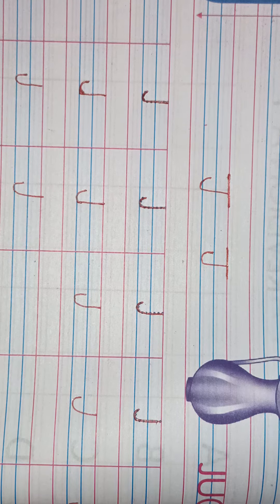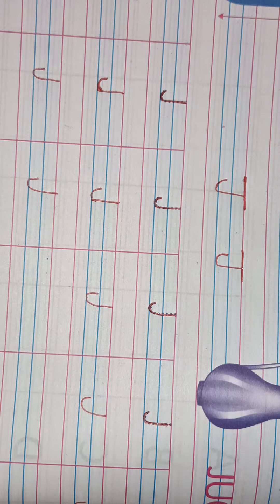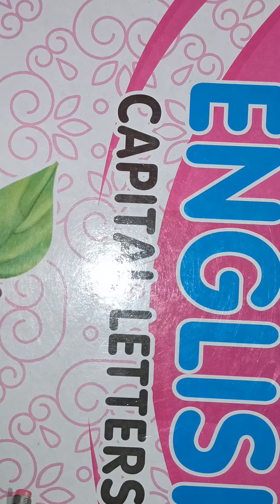Aur page number 71 aapka homework. Yeh aapko complete karna hai apne English ki book mein, page number 70 and page number 71, J capital letter J, J for jug. That's all for today's class.